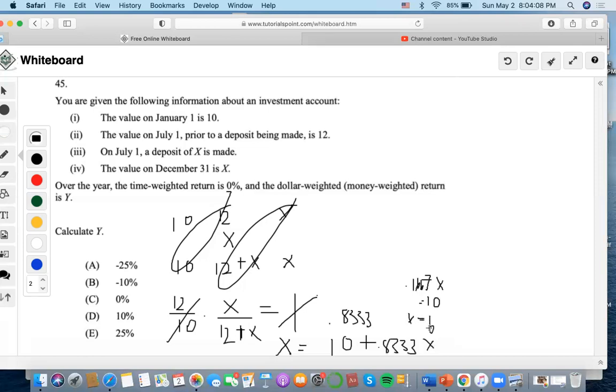Now let's put this in the dollar-weighted return formula. First we have to find interest. The value at the beginning is 10 plus a deposit of X being made, plus interest equals ending value of X. Let's combine these together. We subtract X and find that interest is negative 10.